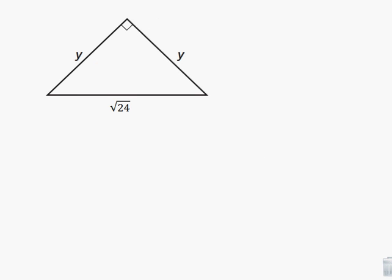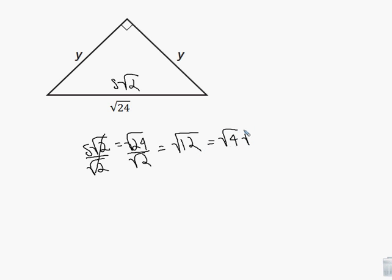One more example. What if the hypotenuse is the square root of 24? Again, it's 45-45-90, and again, this is S square root of 2. So S times the square root of 2 equals the square root of 24. Again, we divide both sides by square root of 2. When we cancel those, 24 divided by 2 is just 12. So this is just the square root of 12, which is the square root of 4 times the square root of 3, which is 2 times the square root of 3. So that's our answer.